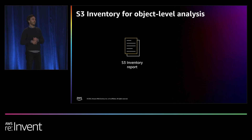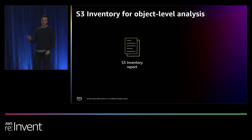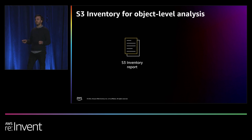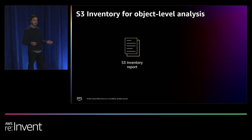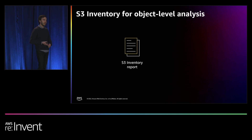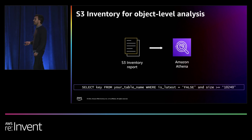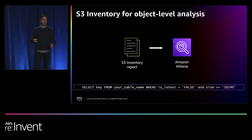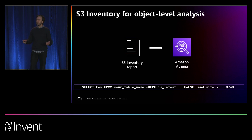S3 Storage Lens is great for insights down to the prefix level. If you want to go to the object level, you should consider using S3 Inventory, which lets you report on your storage and list all objects for a given prefix or bucket. S3 Inventory provides a list of your objects and associated metadata including object name, size, encryption status, replication status, whether an object is current, and much more. Many customers use S3 Inventory with Amazon Athena to derive actionable insights. Athena uses SQL expressions to analyze your data and is commonly used for ad hoc data discovery. For example, you can use Athena to filter the Inventory report and get a list of objects that are non-current versions and greater than a specified size.